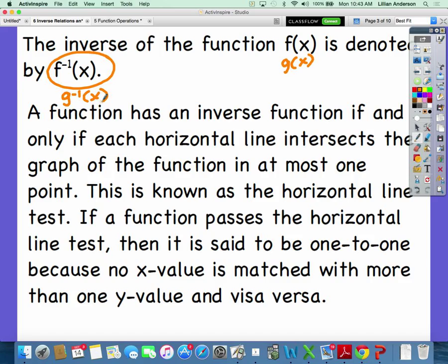Now, a function has an inverse function if and only if each horizontal line intersects the graph of the function in at most one point. This is known as the horizontal line test. Very similar to the vertical line test. What does the vertical line test tell us? If it's a function or not. Remember, to be a function, it cannot cross that vertical line no more than one time. Same concept with the horizontal line test. It cannot cross a horizontal line no more than once in order to be a function.